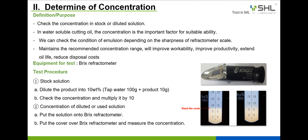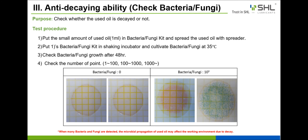The equipment for testing is a BRIX refractometer. Next, we learn about the test method of anti-decaying ability, checking bacteria and fungi. The purpose of this method is to check whether the used oil is decayed or not. When many bacteria and fungi are detected, the microbial propagation in used oil may affect the working environment due to decay.